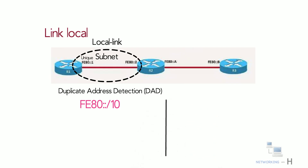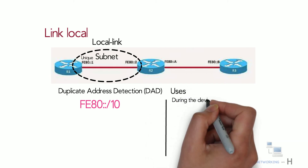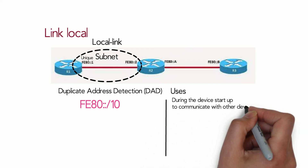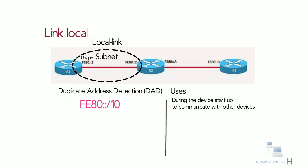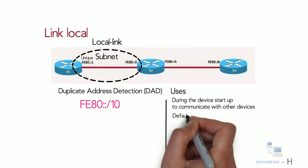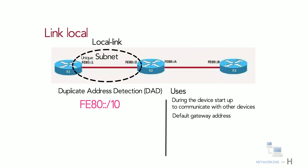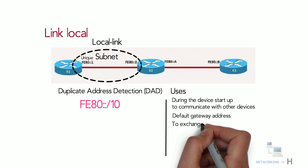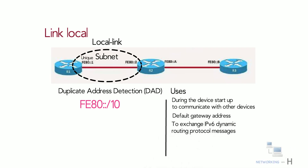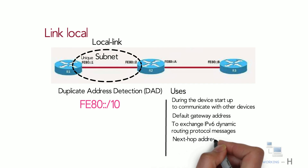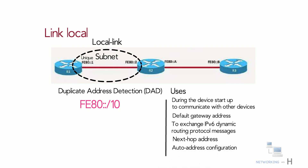Some of the ways IPv6 devices use link local addresses include: when a device starts up before it obtains a global unicast address, it uses its IPv6 link local address as its source address to communicate with other devices including the local router. Devices use the router's link local address as their default gateway address. Routers exchange IPv6 dynamic routing protocol messages — such as OSPFv3, EIGRP for IPv6, and RIPng — using their IPv6 link local addresses. IPv6 routing table entries from dynamic routing protocols use the link local address as the next hop address, and they are also mostly used for auto address configuration and neighbor discovery.